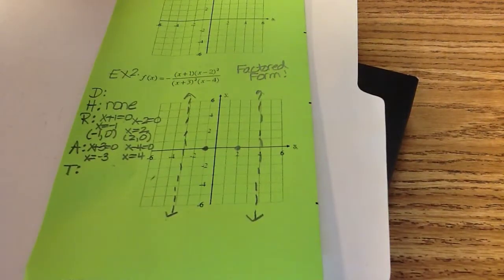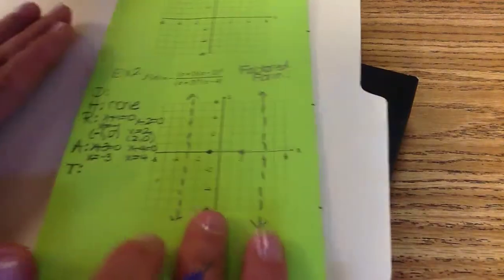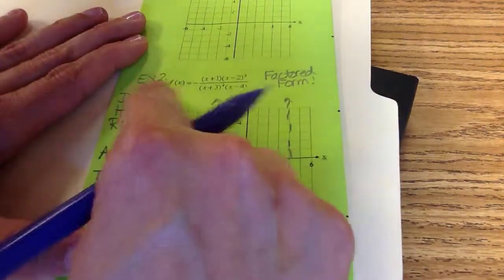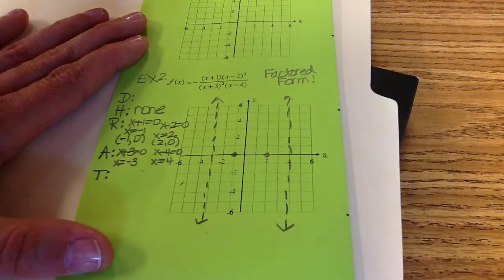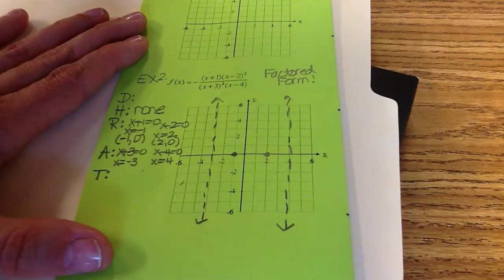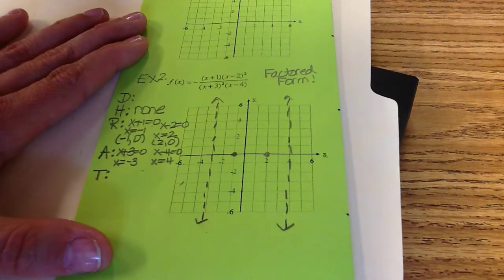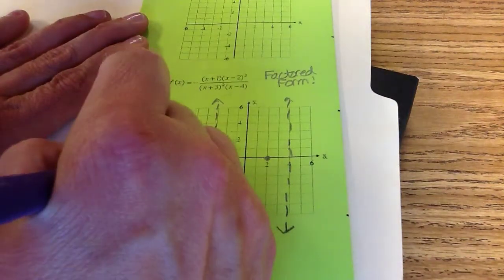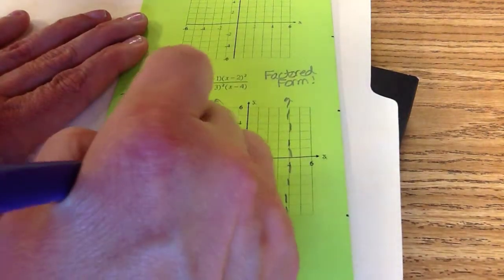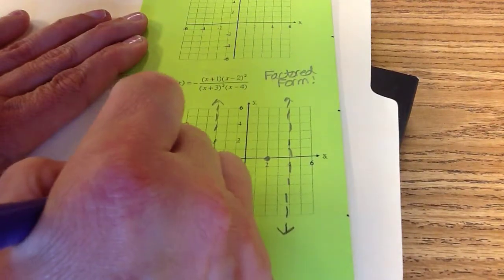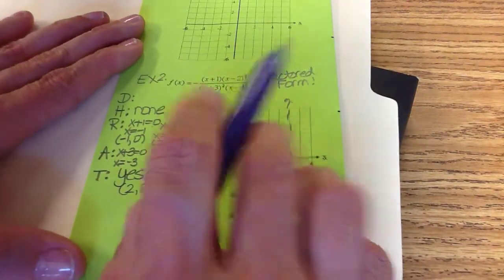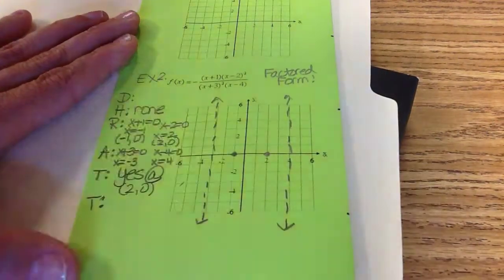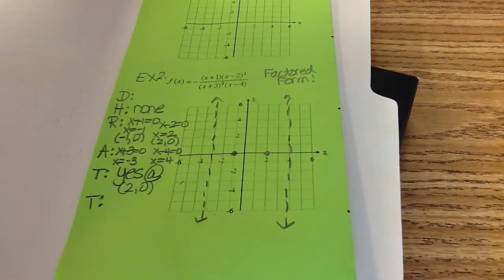Now T. The first T is tangency. Tangency is like multiplicity. Look in the numerator. Do any of those roots have a multiplicity that's even? So tangency is like multiplicity. Do any of those roots in the numerator have an even multiplicity? And it's yes. So there's tangency at two, zero, because two, zero has a multiplicity of two because of that exponent.